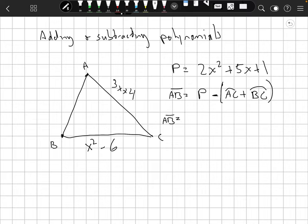And so let's just fill in our expression. So perimeter. So AB equals 2x squared plus 5x plus 1 minus. Let's go AC. That's 3x plus 4 plus x squared minus 6. Something like that.